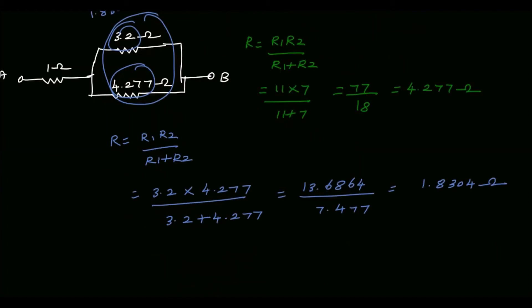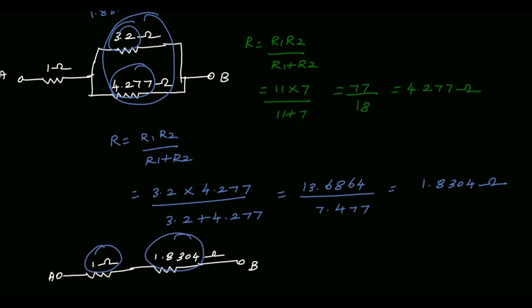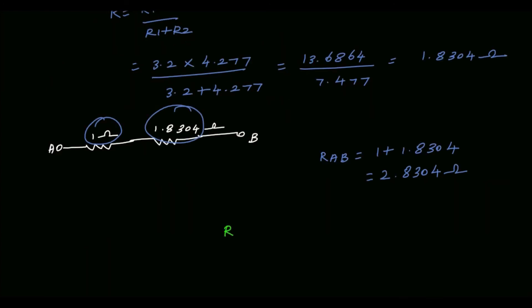Now we will redraw the circuit: terminal A, 1 Ohm, then we replace the parallel resistors 3.2 and 4.277 by 1.8304 Ohm, and terminal B. Now these 1 Ohm and 1.8304 Ohm are connected in series. So the resistance between terminals A and B is equal to 1 plus 1.8304. The final answer: R_AB, the resistance between terminals A and B, is 2.8304 Ohm.